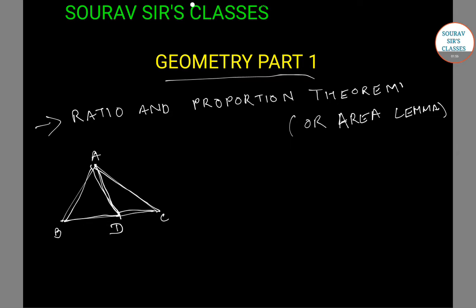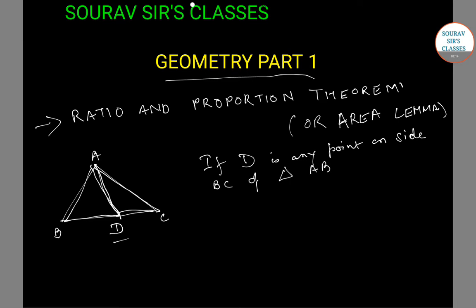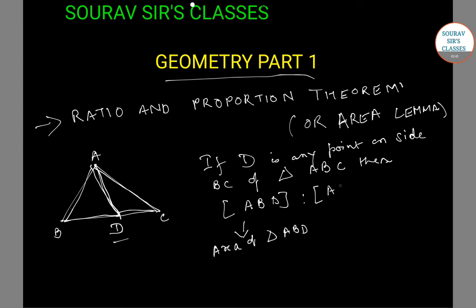So the Ratio and Proportion Theorem says that if D is any point on side BC of triangle ABC, then the area of triangle ABD to the area of triangle ADC is proportional to BD to DC.